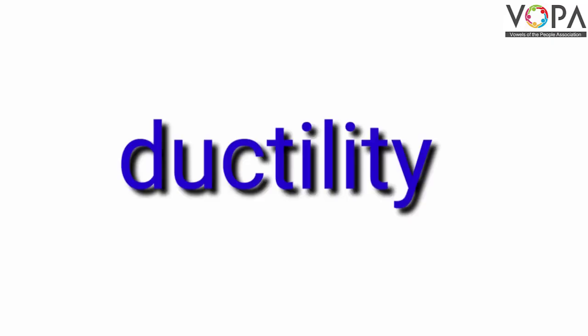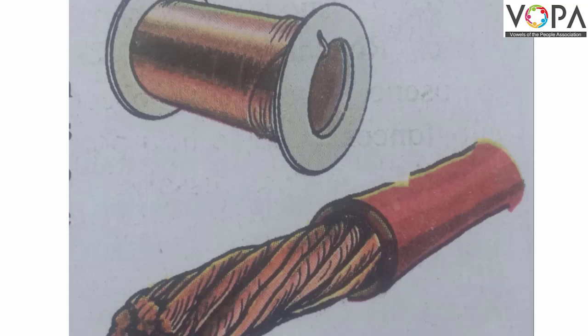The second property of metals is ductility. Ductility means metals can be stretched and drawn into wires. This property of metals is called ductility.